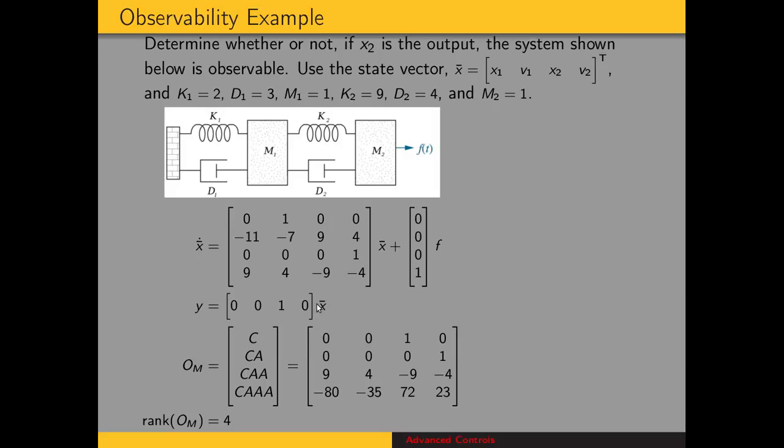So we have 0, 0, 1, 0 for our output matrix because x2 is the variable we're going to use for the output. So the position of mass 2 is our output, so we have 0, 0, 1.